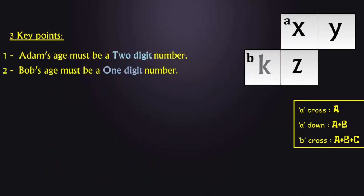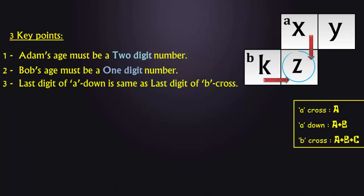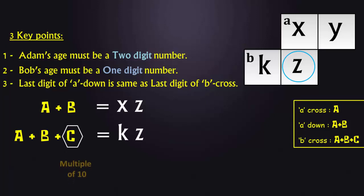And finally, key point number 3. The last digit of A down is same as the last digit of B cross. A down is Adam's age plus Bob's age, and B cross is Adam's plus Bob's age plus Karl's age. That means Karl's age must be a multiple of 10, so as to have the last or rightmost digit unchanged.